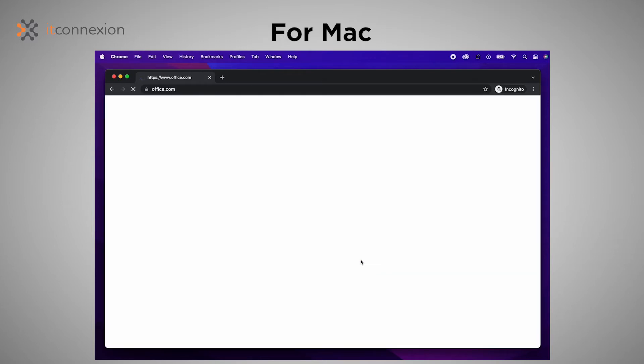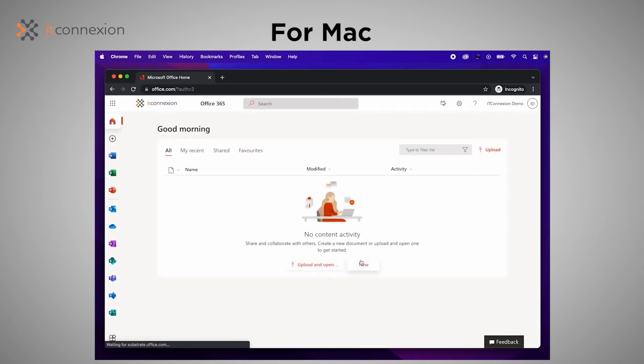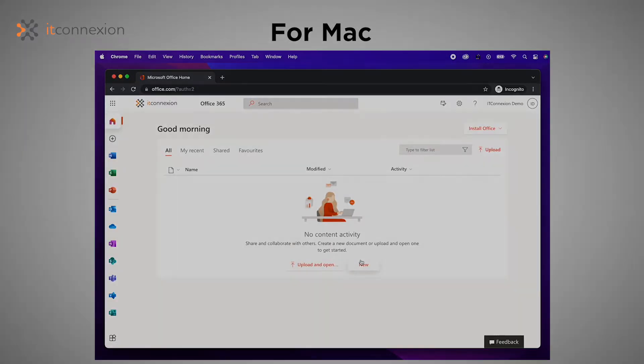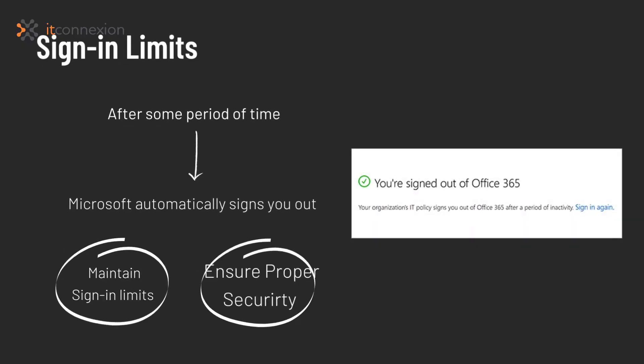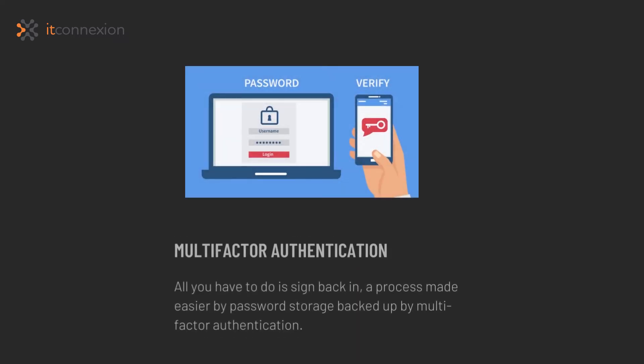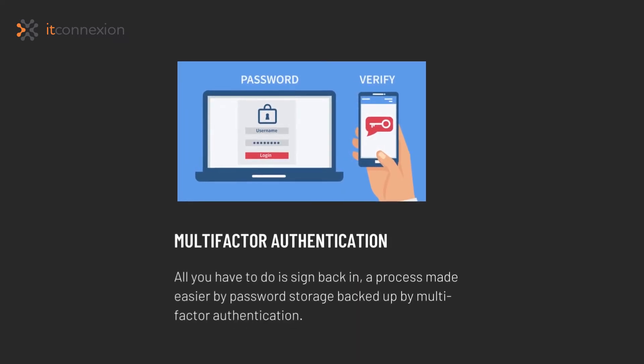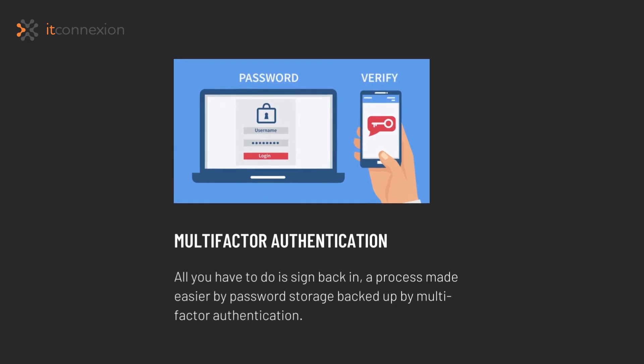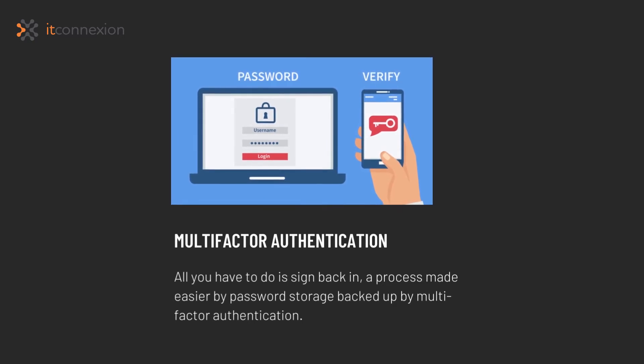Once you sign out, the apps are deactivated until the next sign-in. Sometimes Office may automatically sign you out of devices after an extensive period of time to maintain the sign-in limit and ensure proper security. All you have to do is sign back in — a process made easier by password storage backed up by multi-factor authentication.